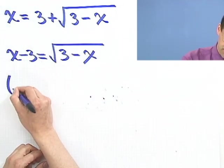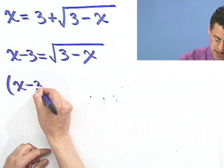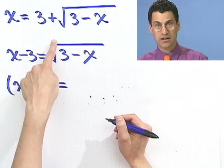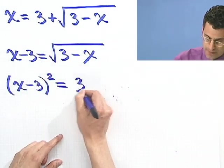So what I'm going to do is bring the three over. And I see x minus three equals the square root of three minus x. So now I'm going to square both sides. On the left, I see x minus three squared. And on the right, the squaring just lifts the radical. So I see three minus x. And now I'm returning to a quadratic, which I can solve.